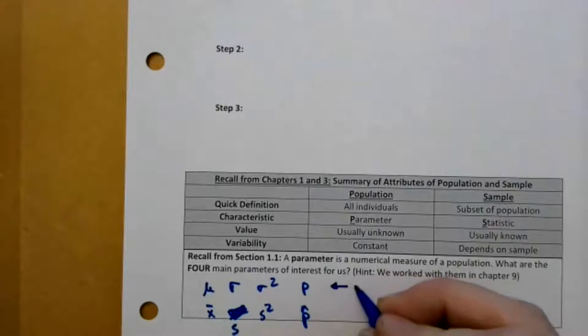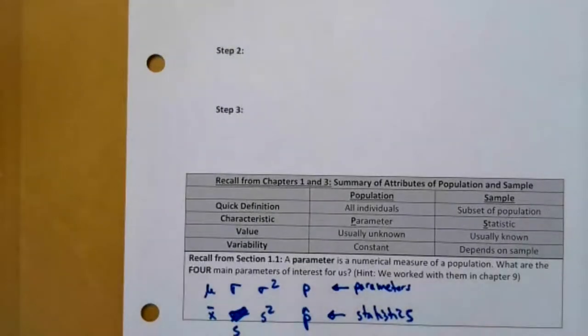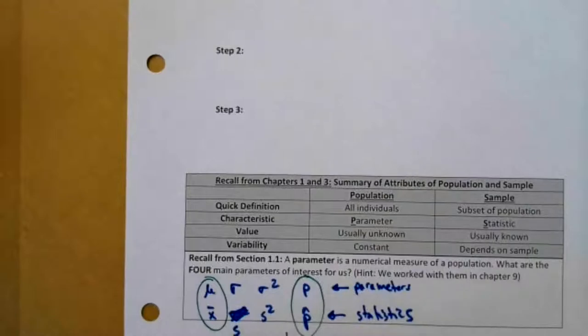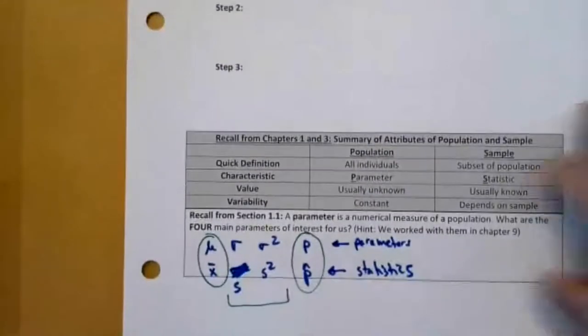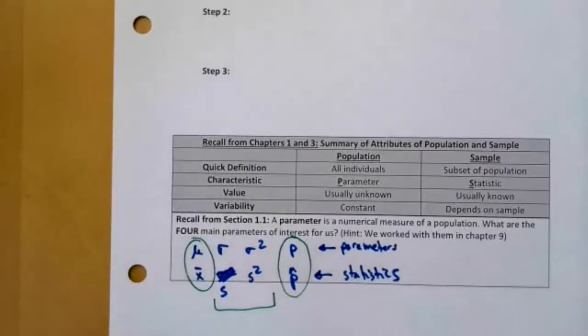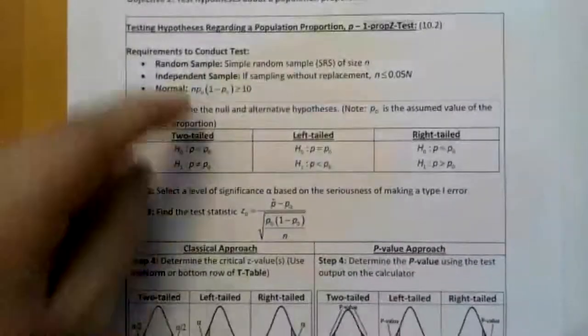Recall from section 1.1, a parameter is a numerical measure of a population. A statistic is a numerical measure of a sample. The four parameters we have studied in this course, we've actually only studied three. But the four that we have is the mean that goes with x bar, the standard deviation that goes with s, the variance which goes with s squared, and the proportion which goes with a p hat. These top numbers are parameters, these bottom values are statistics.